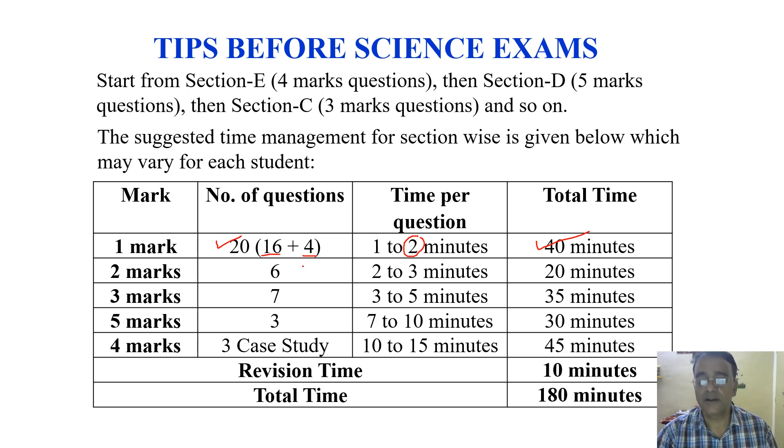So for 2 marks questions, there are 6 questions, and time per question should be 3 minutes, so that's 18 to 20 minutes. For 3 marks questions, there are 7 questions, time per question should be 3 to 5 minutes, max altogether 35 minutes. For 5 marks questions, only 3 questions, so time allotted is 7 to 10 minutes, maximum 30 minutes. For three case study questions, 10 to 15 minutes each, so maximum 45 minutes. If we add all together, we're getting 170 minutes, so 10 minutes revision time and total 180 minutes. This is the suggested time management—it may vary for different students.